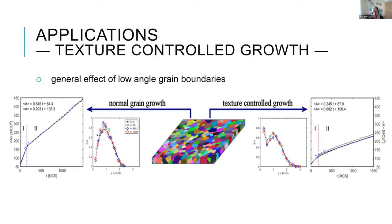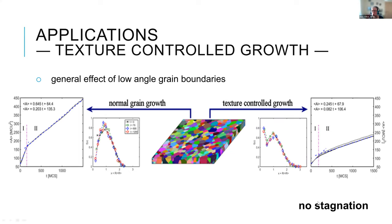There's much more that could be done — for example, real texture-controlled grain growth. The average grain area behaves similarly to normal grain growth initially, but then slows down. Depending on the chosen texture, you can get a completely different grain size distribution. In all these cases, we still observe coarsening for long annealing times — no stagnation. The question is: could we still observe stagnation?